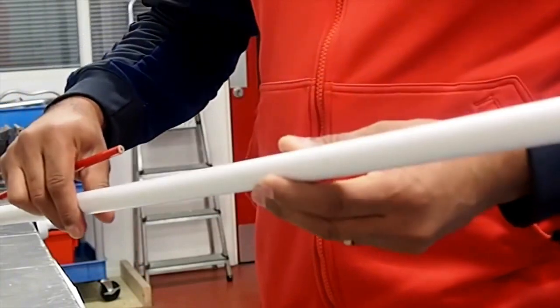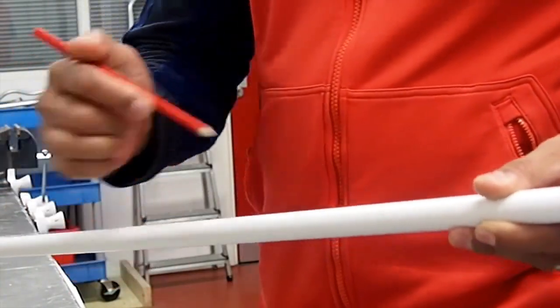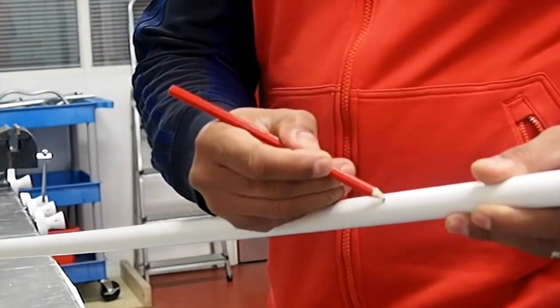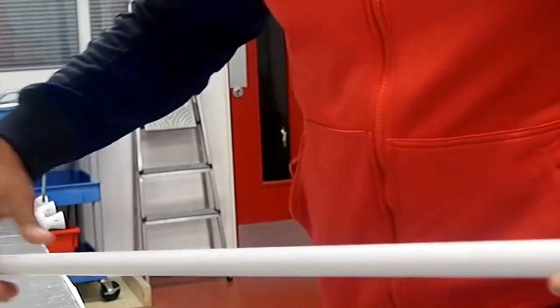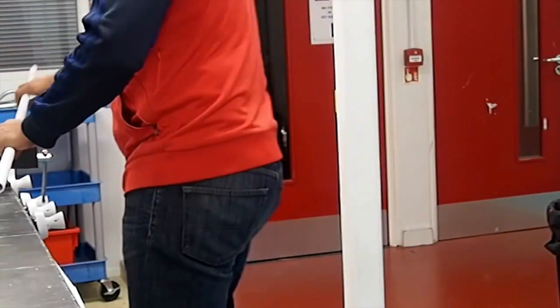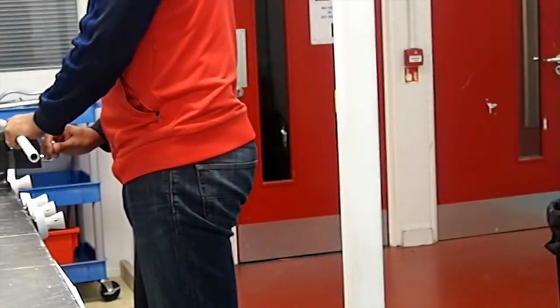As you can see, my conduit is now marked with a pencil. I'm going to put it in the vise down there and cut it off with the senior hack saw.